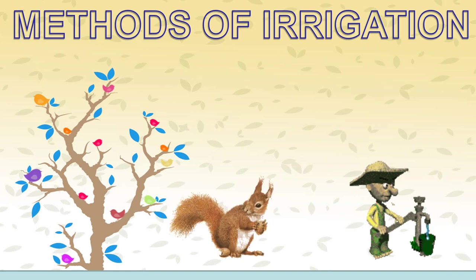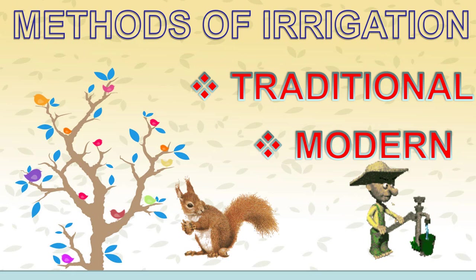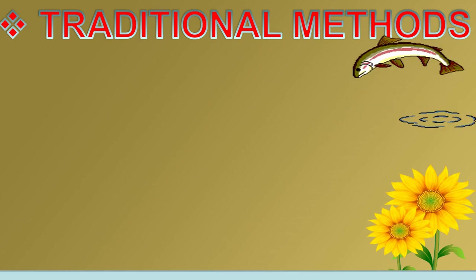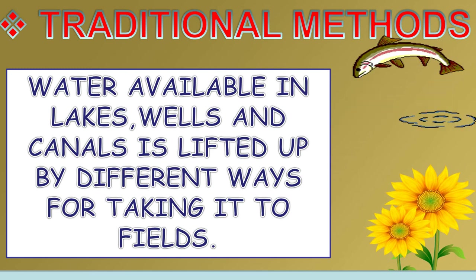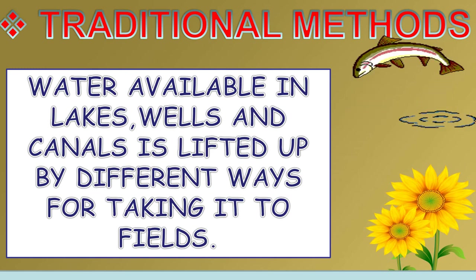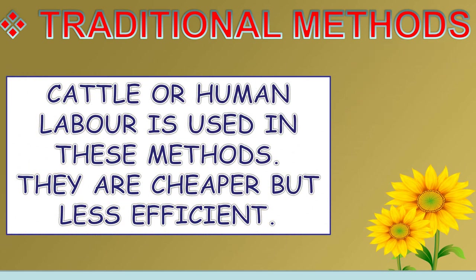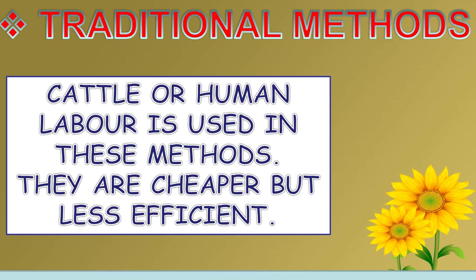Methods of irrigation: traditional method and modern method. Let's see the traditional method first. Water available in lakes, wells and canals is lifted up by different ways for taking it to the fields. Cattle or human labor is used in these methods. They are cheaper but less efficient.